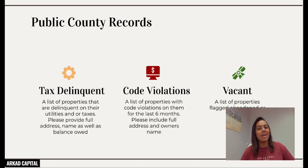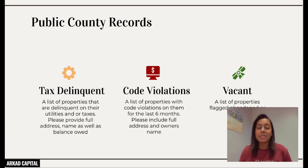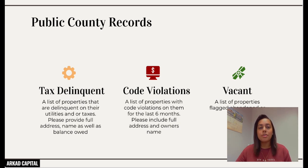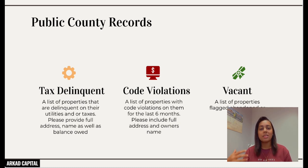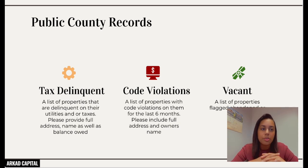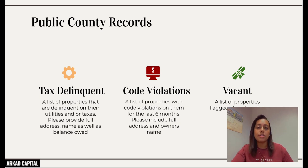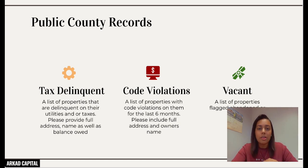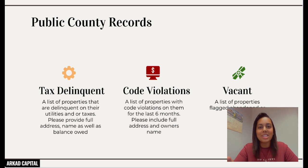My favorite list is vacant and abandoned homes. Owners of vacant properties are usually the most motivated because the house is literally just sitting there wasting money — and they're easy to show and get into. The only issue is it's very competitive, because everyone goes after vacant properties. With public county records, I ask for a list of properties flagged abandoned or vacant. In New Jersey, if you have a vacant property, you're required by law to register it with the city — so we're getting information directly from the source, which is more accurate than software pulling potentially outdated data.